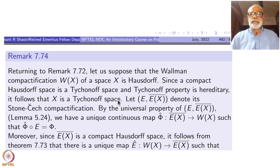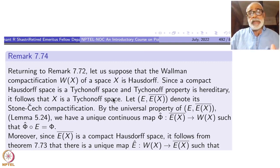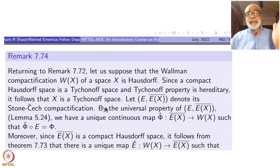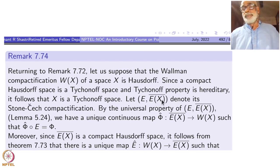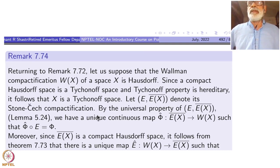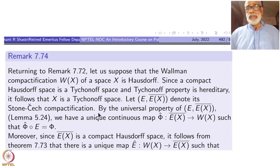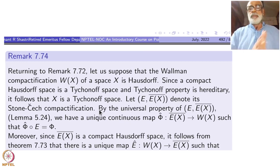Having accepted that, let us see what we can do when Wx is Hausdorff. Now x is a Tychonoff space because Wx is Hausdorff. Being a Tychonoff space, we can also form the Stone-Čech compactification (e, βx). What is the difference between these two compactifications is the natural question we want to investigate.